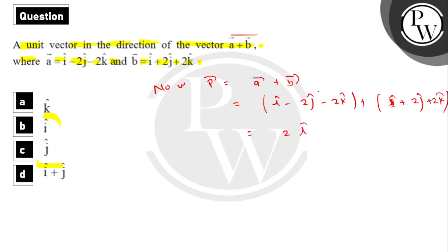This gives us 2i-cap. The 2j-cap terms cancel out and the 2k-cap terms cancel out. So we have 2i-cap and its magnitude is 2.